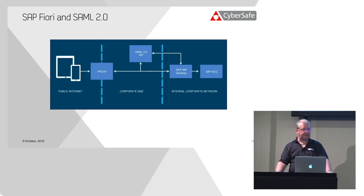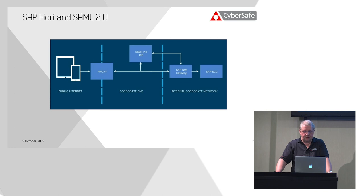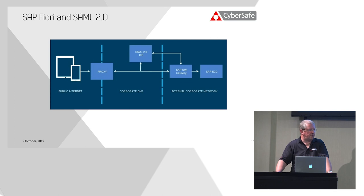Let's look in more detail at the SAML 2.0 option. Typically you'll have a reverse proxy or web dispatcher bridging your public internet or mobile phone network with your SAP systems on-premise. You'll have a SAML IDP, which might be Active Directory Federation Services. A SAML IDP would be hosted somewhere — it might be in the cloud, so it won't necessarily need to run on a server. Your SAP NetWeaver gateway will need to connect to that IDP during the authentication process, and behind your gateway you might have your ECC system where data is stored.